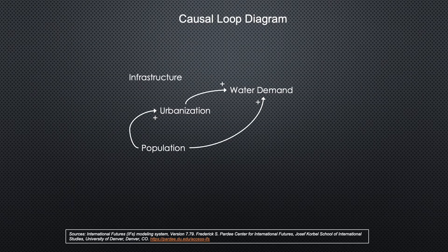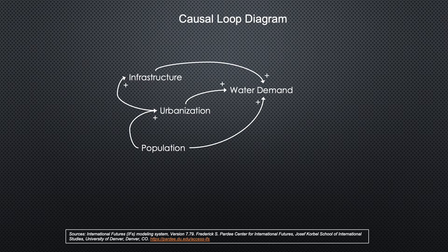The next element in the system is the infrastructure. According to the World Health Organization, in 2020, 25% of the rural population and 4% of the urban population did not have a safe water source. Urbanization will continue to increase the demand for infrastructure and the government's necessity to build infrastructure to support the growing cities. The increase in infrastructure will in turn reinforce the urbanization of Ghana.